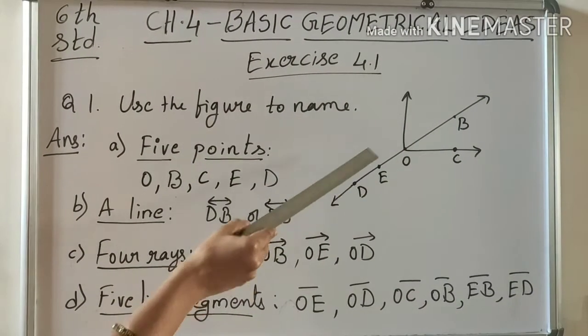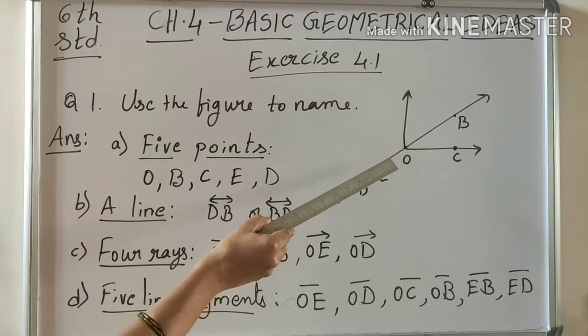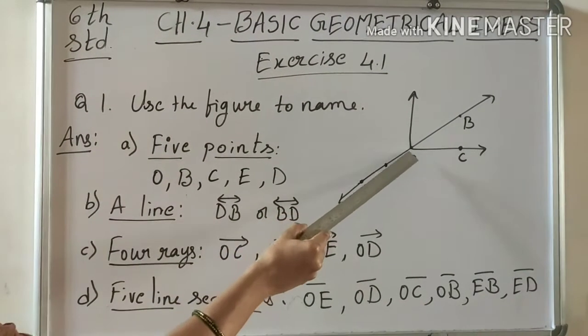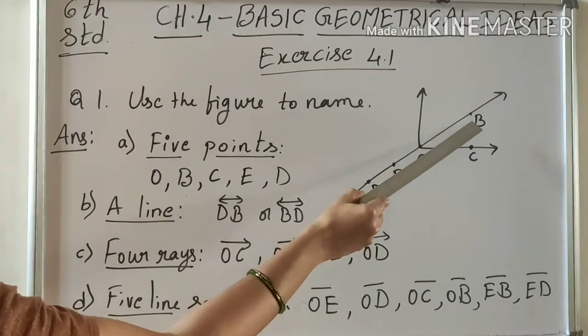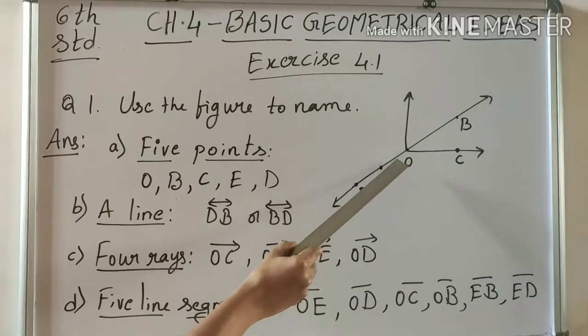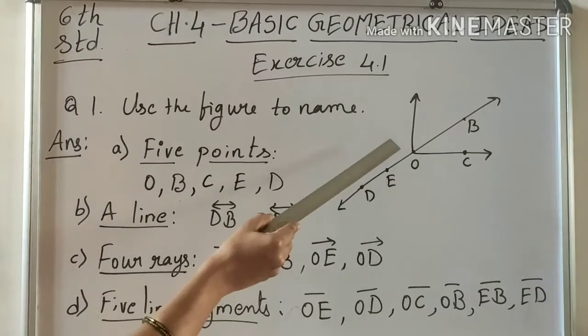Next, rays: we need to write any rays here. In this figure there are four rays. What are they? OC, OB, OD, and OE. There are four rays.